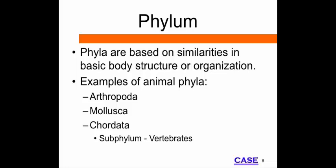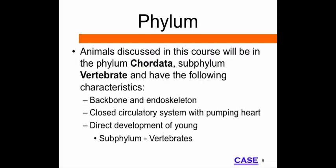The phylum in which domestic animals and humans are classified is Chordata. This phylum is characterized by the development of a notochord. In vertebrates, the notochord develops into the backbone. Vertebrates are a subphylum of Chordata, characterized by the presence of a backbone and endoskeleton, a closed circulatory system with a pumping heart, and direct development of their young.